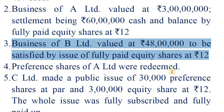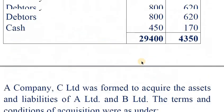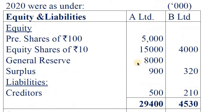Entry for payment to preference shareholders — in the case of B. Ltd., there is no preference share capital. Therefore, there is no need for an entry for discharging or redemption of preference share capital.